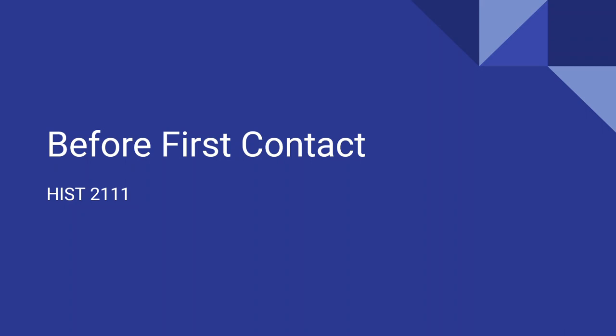Today I have two fairly short topics for you. One is before first contact and the other is after first contact. What I mean by first contact is when the European populations and people come to the New World. So let's start with before first contact, and there are three groups of people I'm going to talk about here: Native Americans, also known as indigenous people, Europeans, and West Africans.